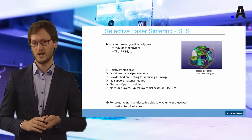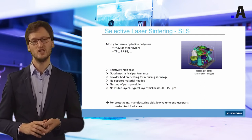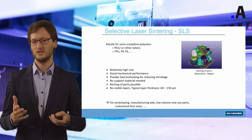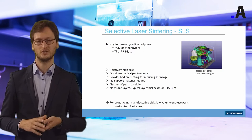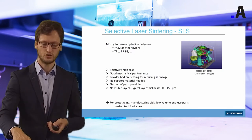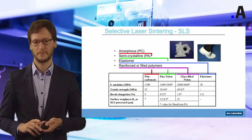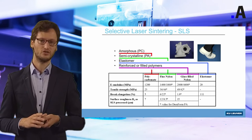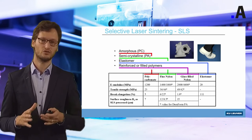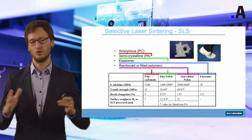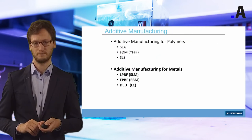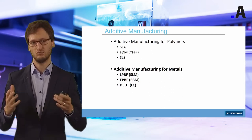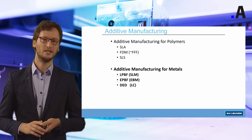To summarize, SLS is a widely used technology in industry for printing mainly polyamide 12, for manufacturing aids, low-volume end-use parts and customized medical applications such as foot soles. An overview of different polymers that can be processed with this technology is shown here — the more polymers you can process, the more potential applications you can cover. So far for 3D printing of polymers, we mentioned three widely used techniques.